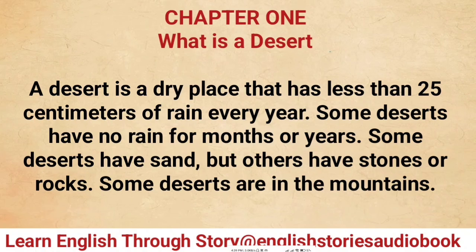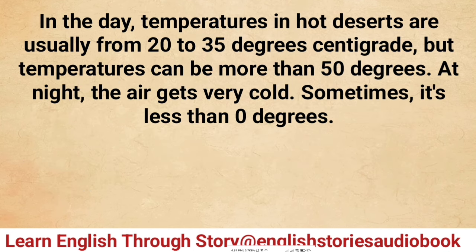Chapter one: What is a desert? A desert is a dry place that has less than 25 centimeters of rain every year. Some deserts have no rain for months or years. Some deserts have sand but others have stones or rocks. Some deserts are in the mountains.